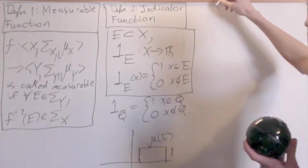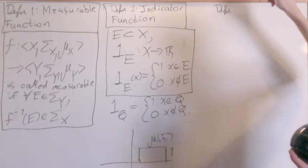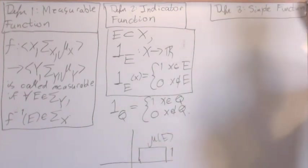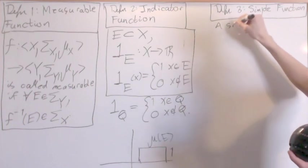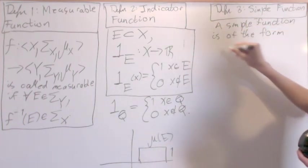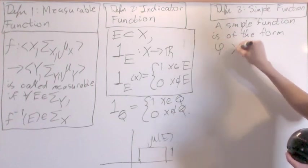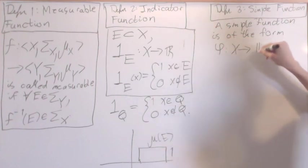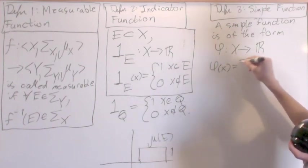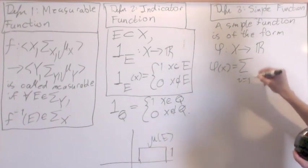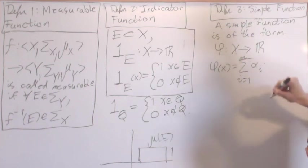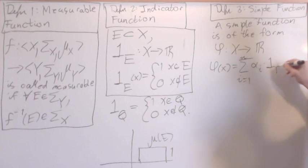And I'm going to introduce one more type of function. That's a simple function. A simple function is of the form phi that brings you from x into the real numbers. And then we have phi of x equals the sum from i equals 1 until n of alpha i times an indicator function ei.